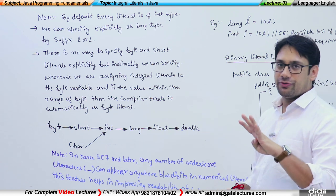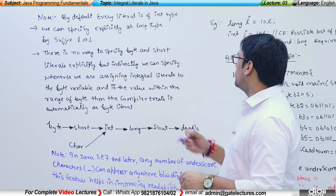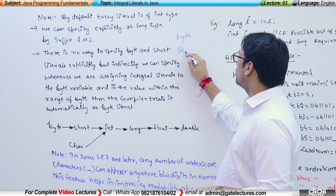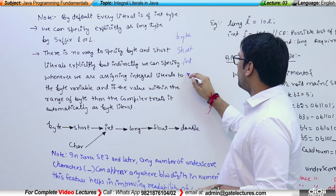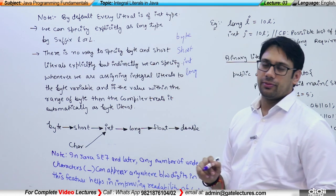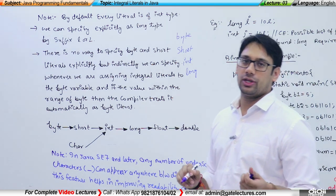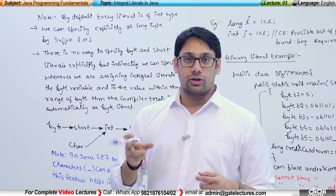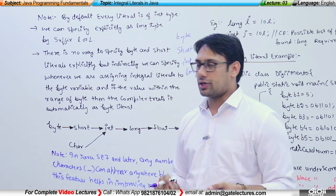As you know, there are four types of variables by which we can store integer numbers in Java. We have byte, we have short, we have integer, and we have long. All these four types of variables are going to store integer numbers, and I have already specified what is the size of the value, or the maximum and minimum number that you can store in these variables.